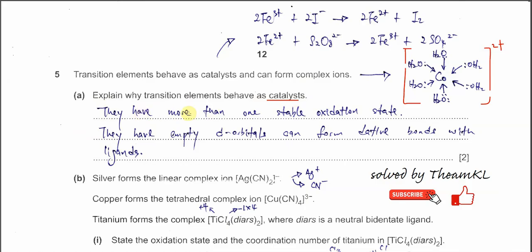You need to explain these two things. Because they have more than one stable oxidation state, for example iron 3 and iron 2, therefore it can be used as a catalyst for some reactions. And for these transition elements, they have empty d-orbitals which can form dative bonds with ligands, for example water or even iodide or the halides. Because it can form dative bonds, it can involve in some reactions. These are the two things you must explain.